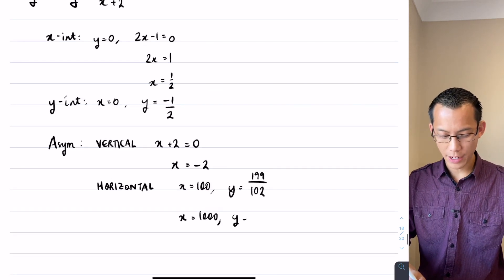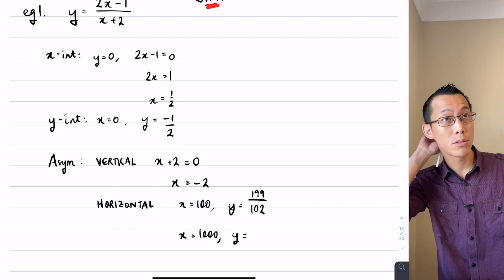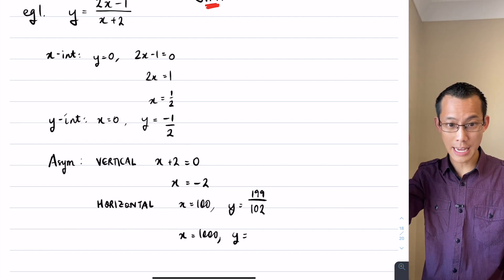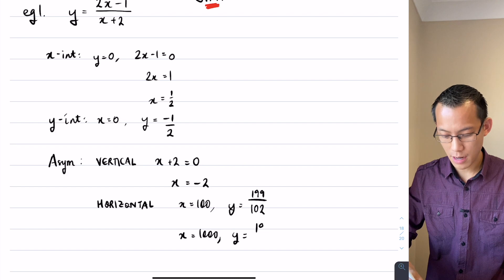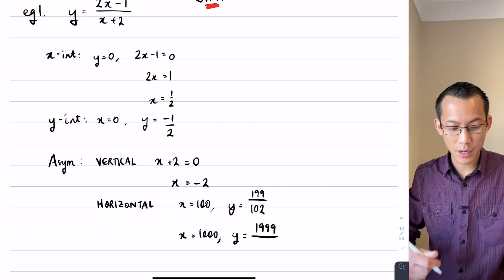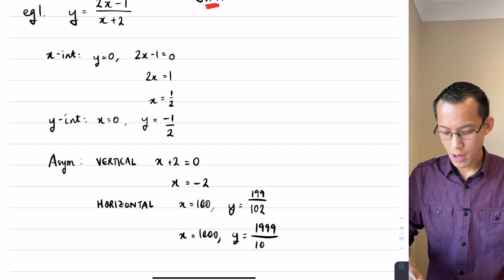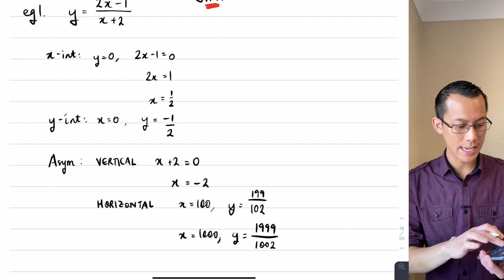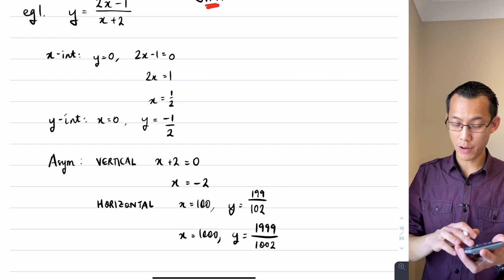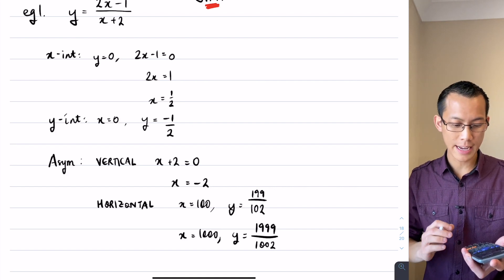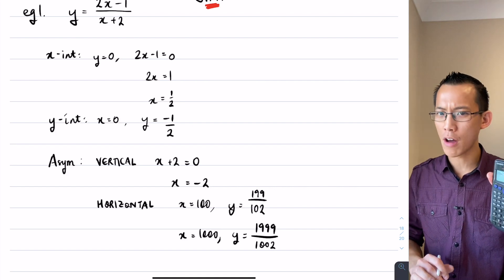Well if I go ahead and do the same substitution, it's going to become 2 lots of 1000, that's 2000 take away 1, so that's 1999, and then I'm going to divide by, substitute again, 1000 plus 2, 1002. Now when I reach for my calculator again, instead of 1.95 which was the previous value, my calculator is now telling me it's 1.995.